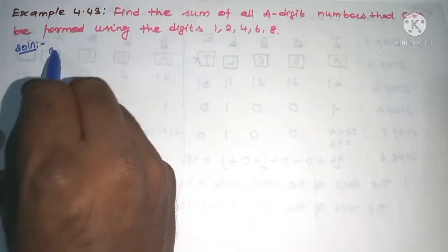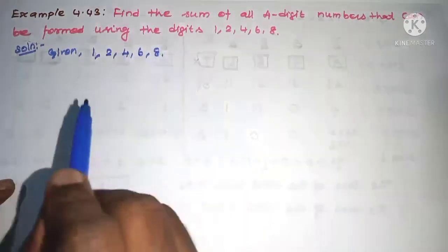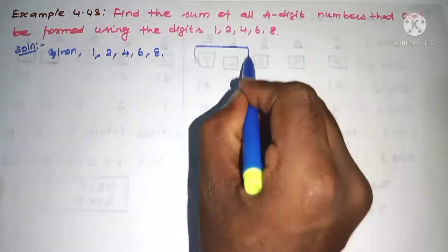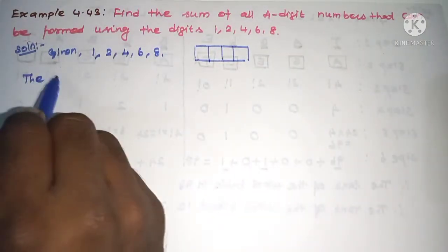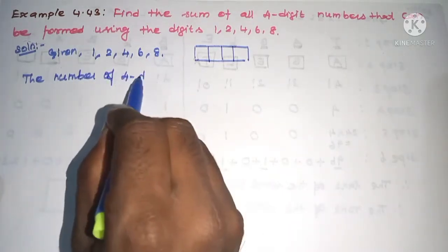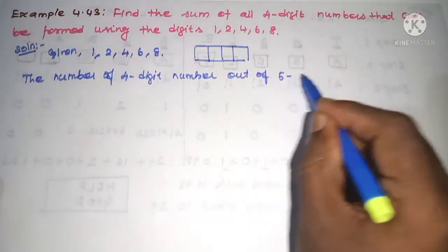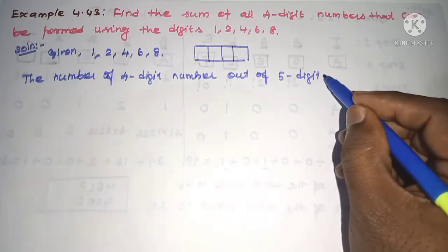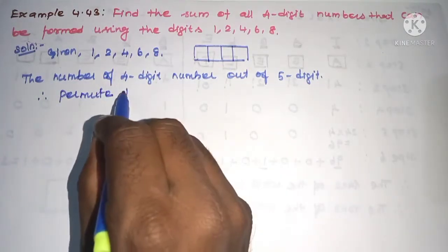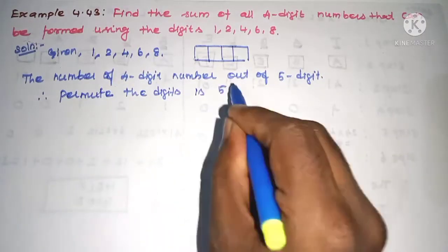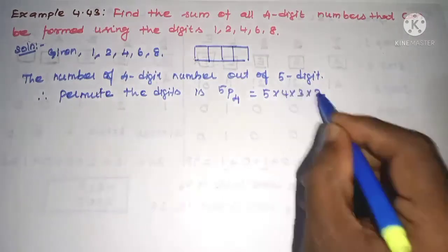See solution. First, given the digits 1, 2, 4, 6, and 8. We want the sum of 4-digit numbers. Total 5 digits are given. Therefore, the number of 4-digit numbers out of 5 digits is 5P4, which equals 5 × 4 × 3 × 2 = 120 arrangements total.